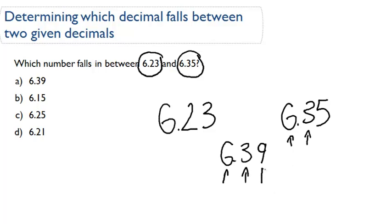However, the number in the hundredths place, there's a nine in the hundredths place and there's a five in the hundredths place here. So this number, 6.39, does not fall in between 6.23 and 6.35 because it is actually greater than 6.35.